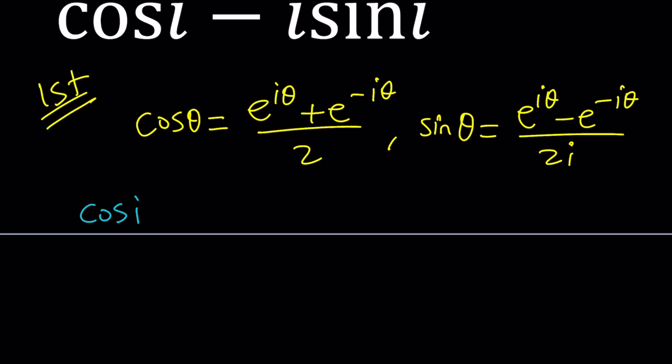So from your cosine i, it's just going to be e to the power i times i, which is i squared, and then negative i squared divided by 2. i squared is negative 1, so it's going to be e to the power of negative 1 plus e to the power 1 divided by 2. And that means 1 over e plus e divided by 2. If you multiply the top and the bottom by e, we're going to get 1 plus e squared divided by 2e.